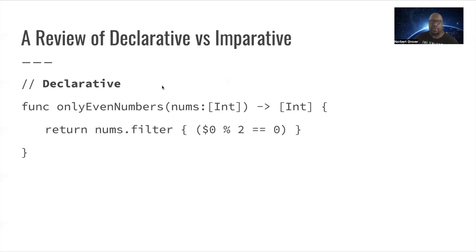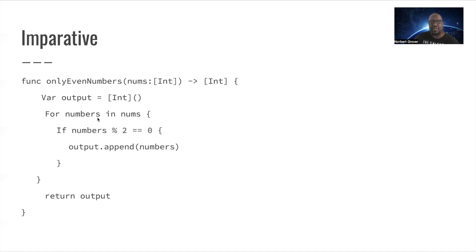In the declarative example, we use filter and check if the modulus of two equals zero — if so, the number is returned; otherwise it isn't. That's declarative. Imperative, on the other hand, spells out all the functionality: we loop through the numbers, check if each number is even, append it to an empty array, and then return the array of even numbers. We see every step of the process. In summary, imperative loops through everything explicitly, while declarative uses a higher-order function.